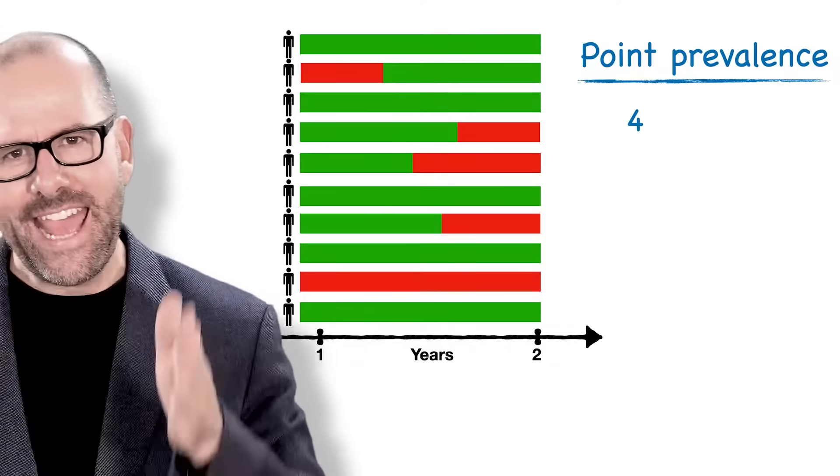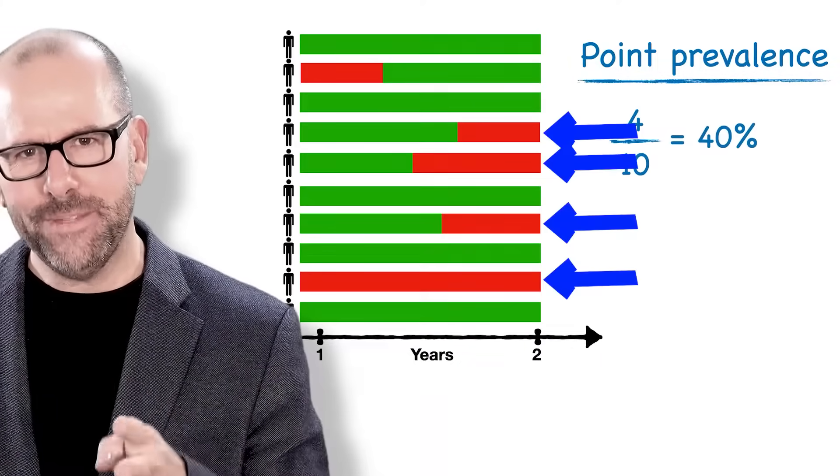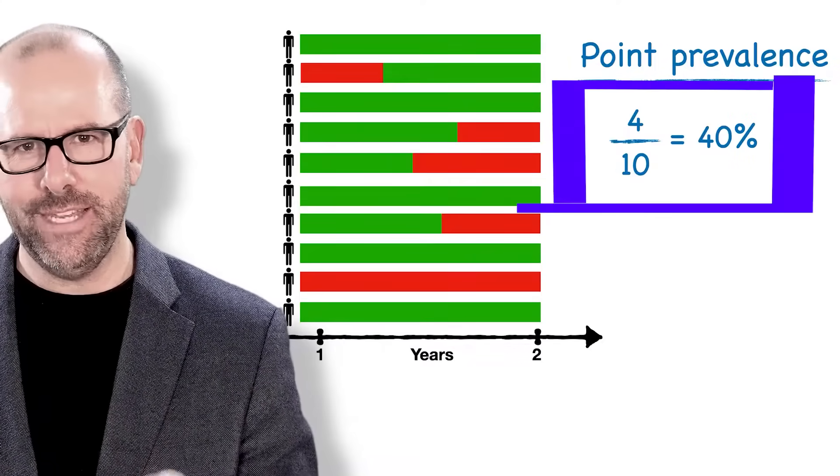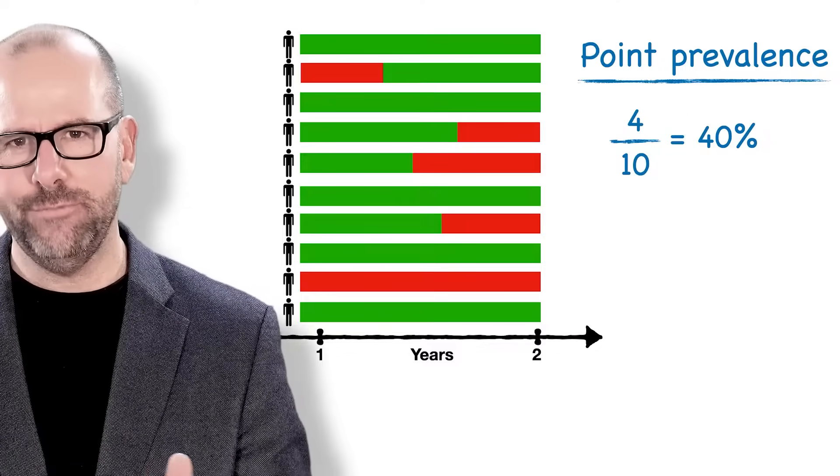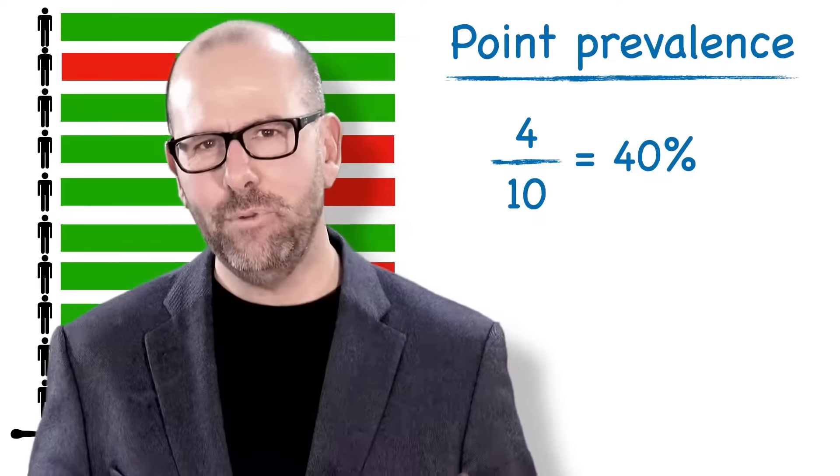So in this example, at year two, there are four people that have cancer. Four out of the 10 is 40%, so the point prevalence—at a point in time, we call it the point prevalence—is 40%.